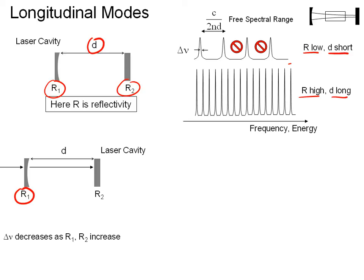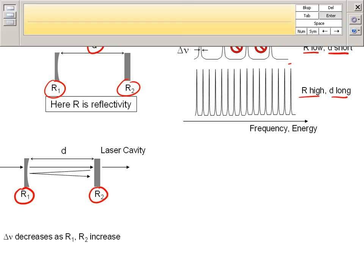When the ray hits the second mirror with reflectivity R2, some of the light is going to be reflected, and some is going to be transmitted, as shown right here. The light is going to go back, hit R1, have another reflectivity, come back out, hit R2.